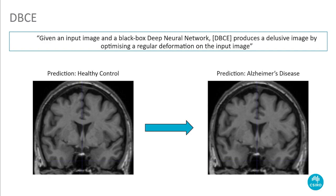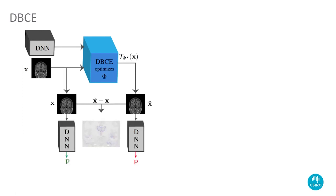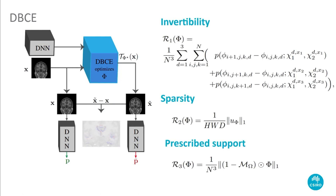Whilst generative methods remain impractical for large 3D images, DBCE proposes to generate new images by parametrizing a free-form deformation that will be used to re-sample a given input image. To meet anatomical plausibility and have uniqueness of the solution to the optimization problem, we enforce constraints on the resulting deformation.